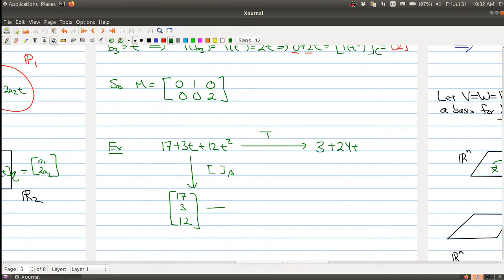Now I want to use the matrix M that I found to map over to R². So I'm going to take this vector and I'm going to map it by multiplying by the matrix M. So I have (17, 3, 12). And when I multiply that out, I end up with (3, 24).